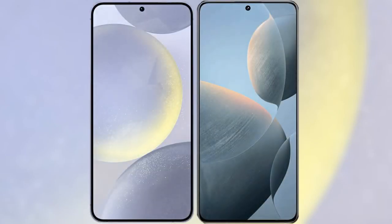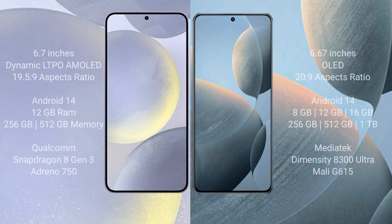I will compare the new Samsung Galaxy S24 Plus with Redmi K70E. Samsung Galaxy S24 Plus comes with a 6.7-inch Dynamic LTPO AMOLED display with an aspect ratio of 19.5:9. Redmi K70E comes with a 6.67-inch OLED display with an aspect ratio of 20:9.